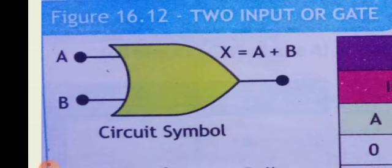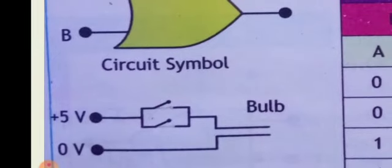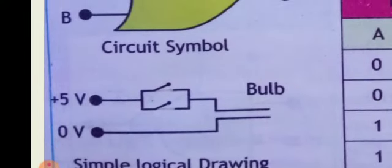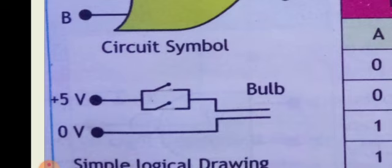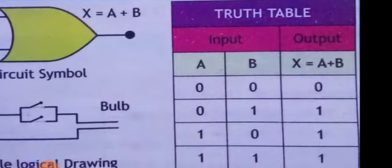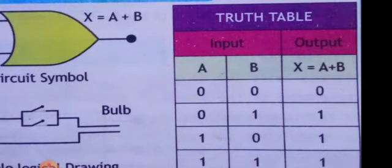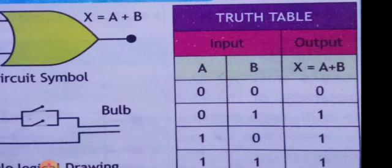Here the two inputs A and B are shown and x shows the output. The simple logical drawing shows two switches attached to a bulb. As is clear from the figure, if any one switch is on or shows the high value, the bulb will glow. There is only one condition in which the bulb will not glow: if both switches show the low value or are off. In the truth table, there is only one condition in which the output will be low — if both inputs are low. In the remaining three conditions, the output will be high if both or any one input is high.